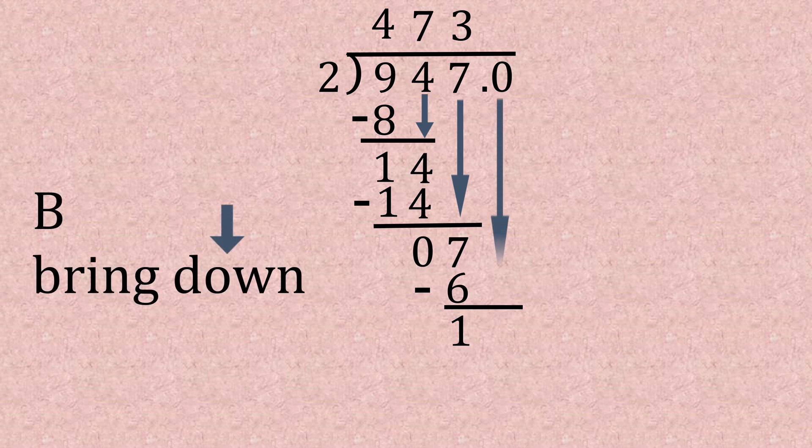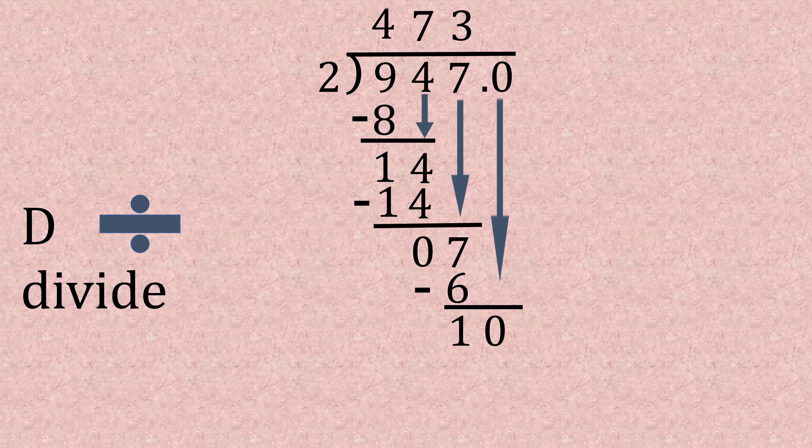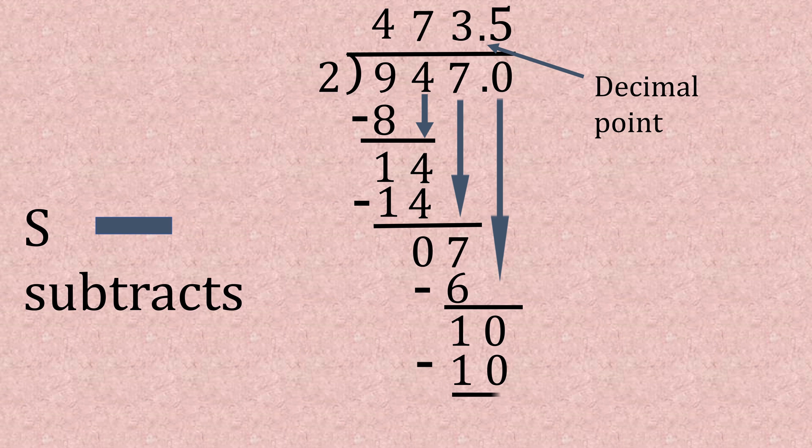So we're going to bring down that 0. Now we've got 10 and we can repeat the process. 10 divided by 2, that's 5. 5 multiplied by 2, you got it, it's 10. We subtract that and it gives us 0. So we've come to the end of the working out and the answer is 473.5.